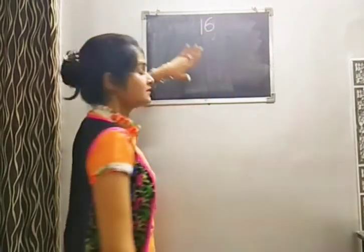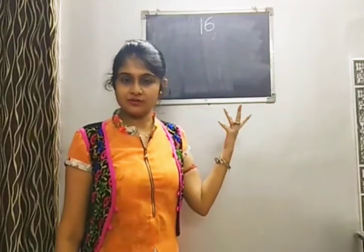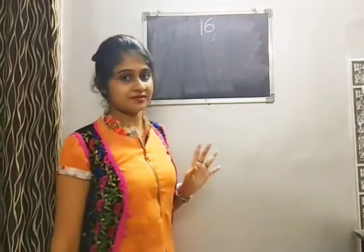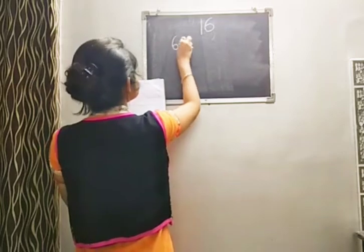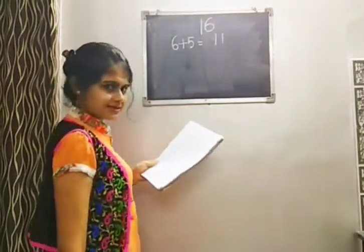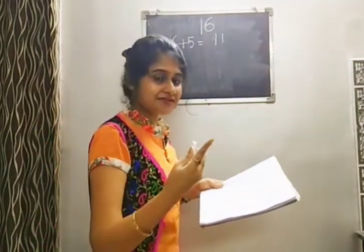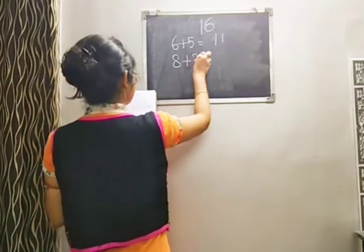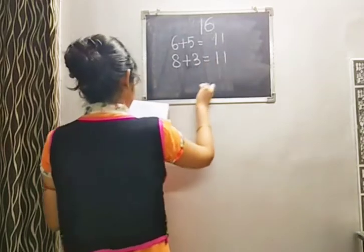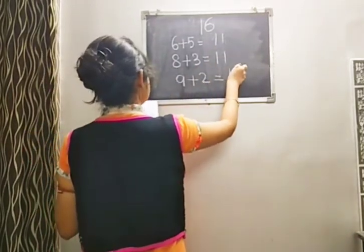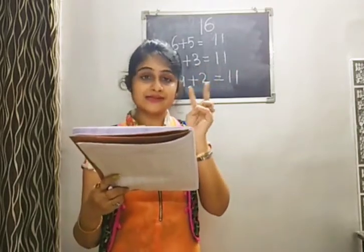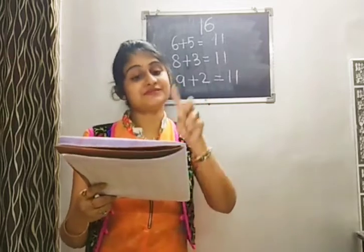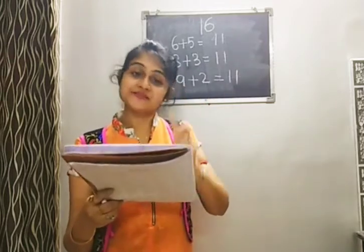You need to know all 16 difficult combinations. Don't think you can skip this and go straight to addition sums — you won't be able to do it. These 16 difficult combination numbers are given in your book on page number 7. For example, 6 plus 5 — you need a little time to calculate and then say 11. Whereas 5 plus 5 is easy. But 6 plus 5 takes a little time. Similarly, 8 plus 3, 9 plus 2, 7 plus 5, 7 plus 6, 8 plus 4, 8 plus 5 — these are the 16 difficult combinations with two different single digit numbers.